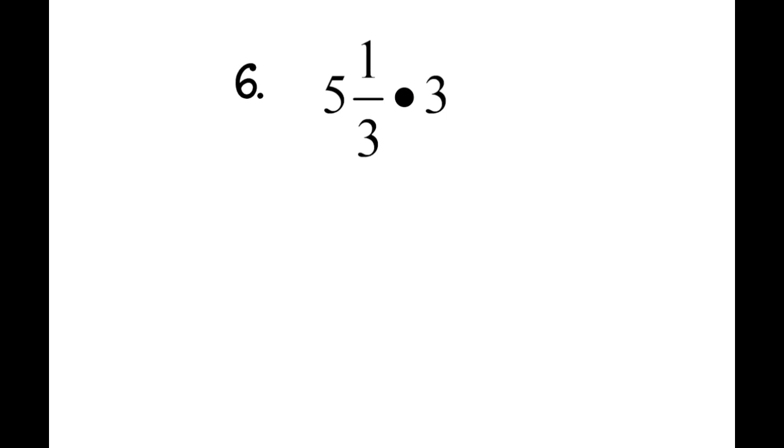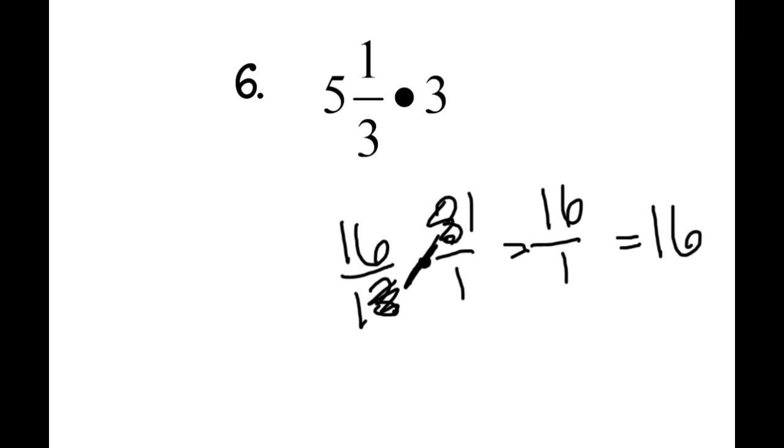Number 6: I have 5 and 1 third times 3. I'm going to make 5 and 1 third improper, and then I'm going to make 3 a fraction. 5 and 1 third as an improper fraction would be 5 times 3 is 15 plus 1, so I'm going to have 16 thirds times 3 over 1. Then the 3 and the 3 cancel each other out and it just becomes a 1. 16 times 1 is 16, 1 times 1 is 1. 16 divided by 1 is 16. I circle it and that's my final answer.